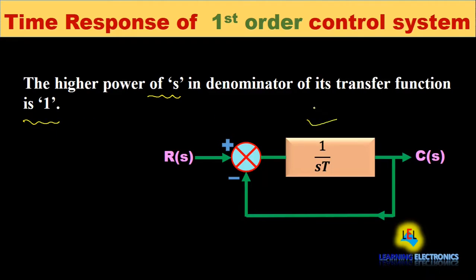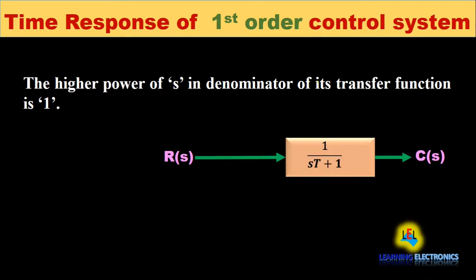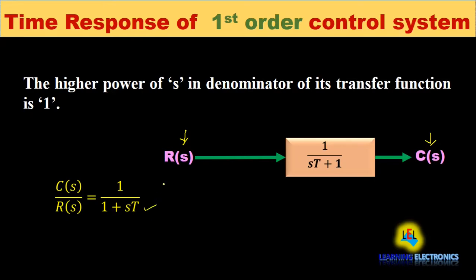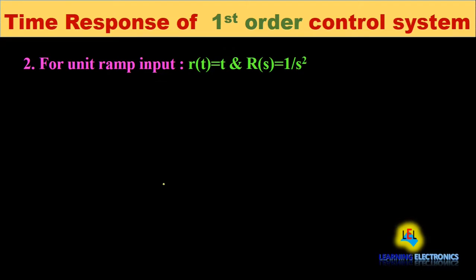This is the block diagram representation of the first order control system. When we find out the overall transfer function, it will be equal to 1 upon (sT + 1), where R(s) is the input excitation and C(s) is the output. Therefore the transfer function C(s)/R(s) will be equal to 1 upon (1 + sT), where T is called the time constant and is equal to RC.